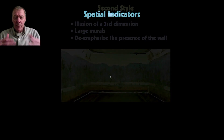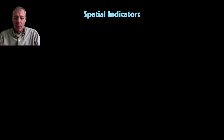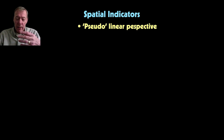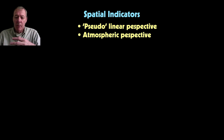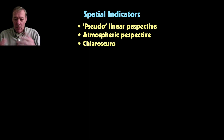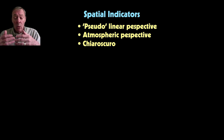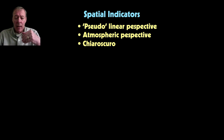To achieve this, Roman painters had to develop spatial indicators to convey a sense of depth. One is what we call pseudo-linear perspective; another is atmospheric perspective; and a third is chiaroscuro. Spatial indicators are methods by which an artist tries to indicate the sense of depth between the viewer and distant objects, rather than leaving everything as flat images on a flat surface.